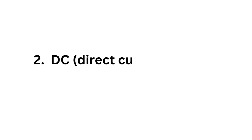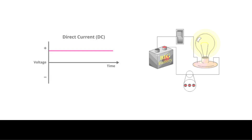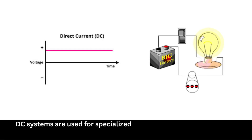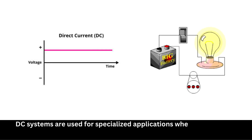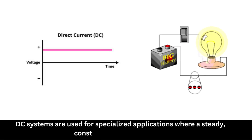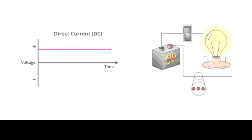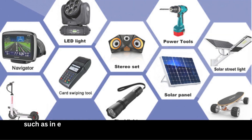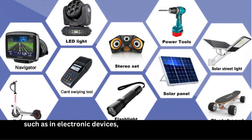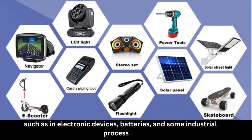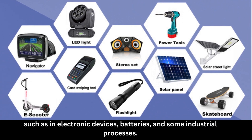Number 2: DC, direct current systems. DC systems are used for specialized applications where a steady, constant voltage is required, such as electronic devices, batteries, and some industrial processes.